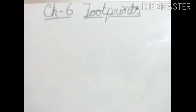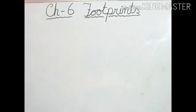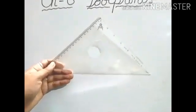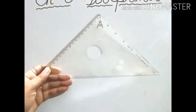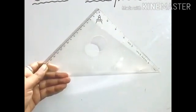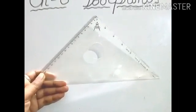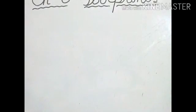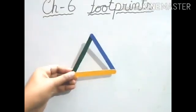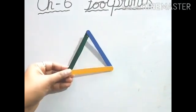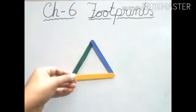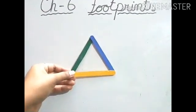Now can you tell me what is the shape of this object? Yes, it looks like a triangle. Very good. Now the next object. Yes, now it is clearly you can understand that it is a triangle.